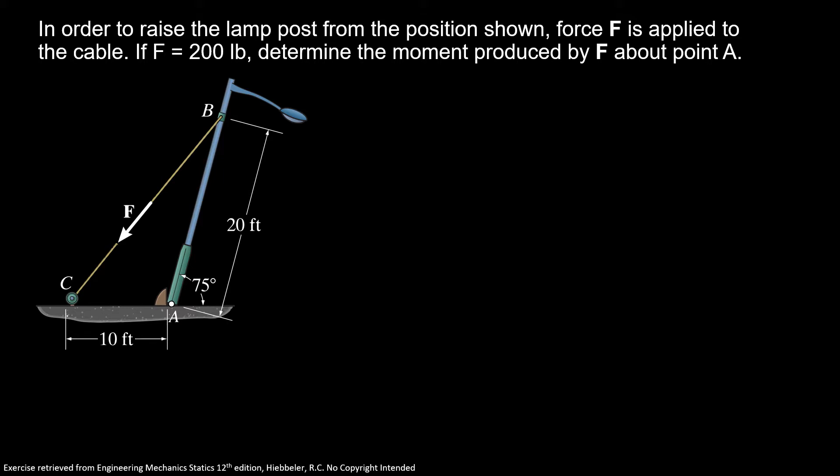Now, before we start our exercise, we're gonna find our dimensions in this triangle here. So here, my vertical position, I have 20 times sine of 75 degrees, that's equal 19.32 feet. This position here is 20 times cosine of 75 degrees, that's equal 5.18 feet.